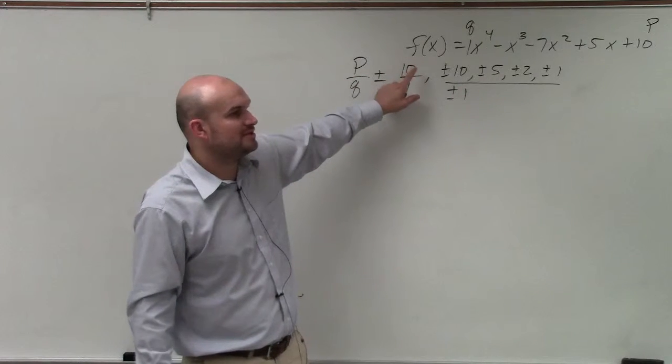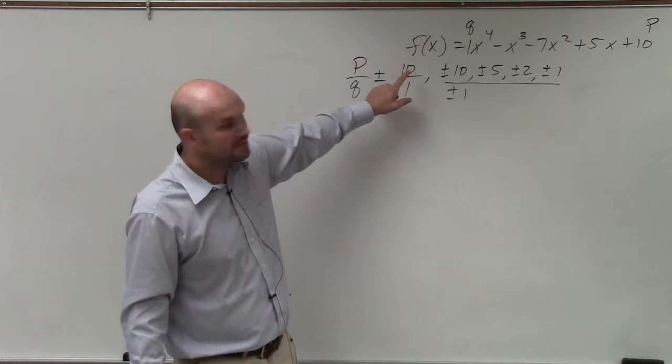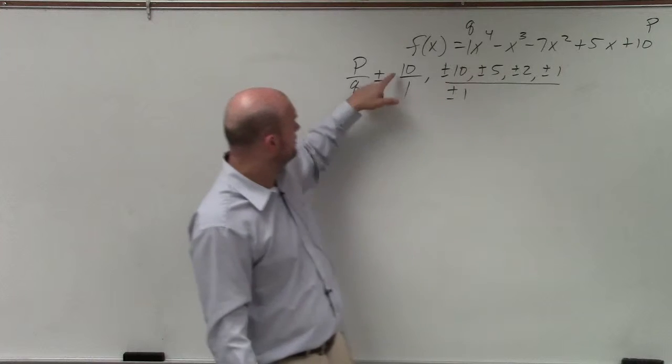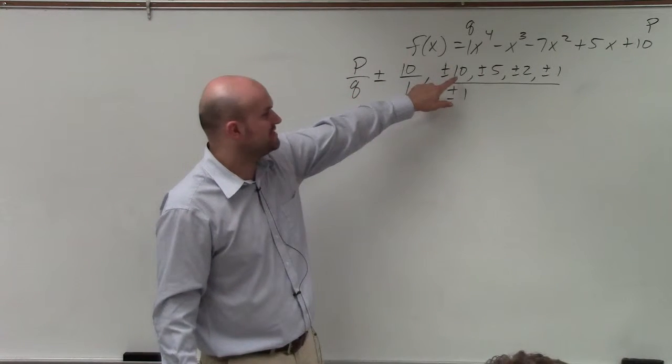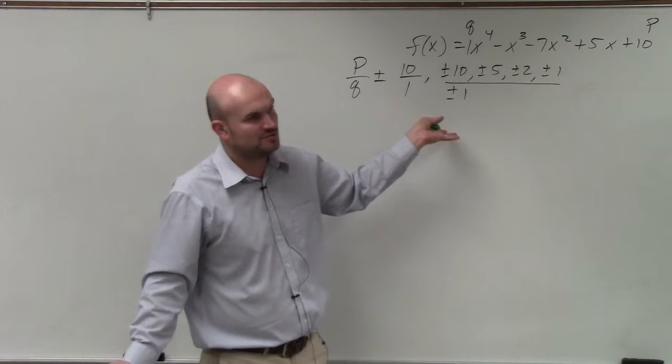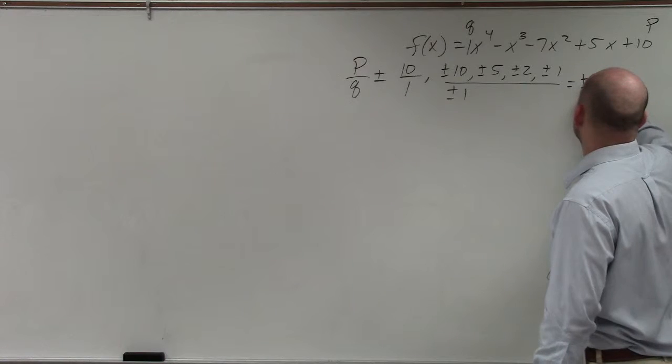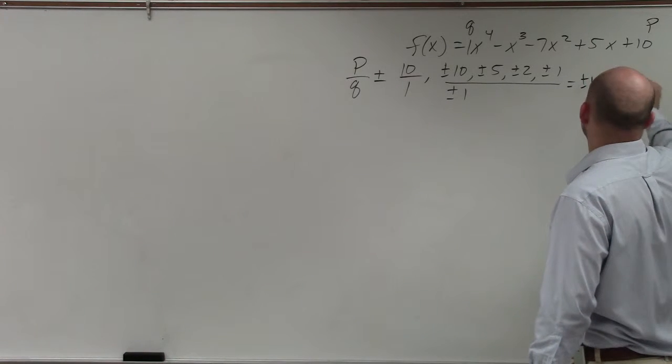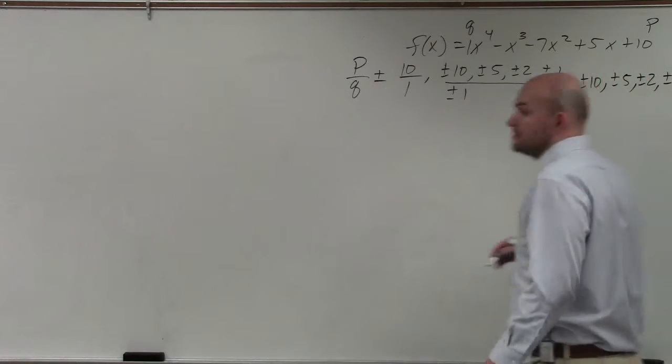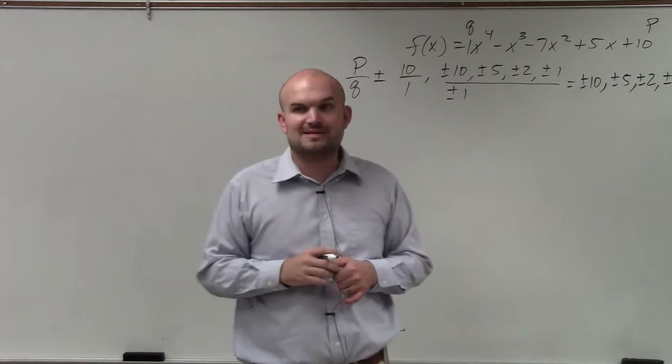You're just taking the factors of 10, which is your p, over the factors of 1. The factors of 10 are 10, 5, 2, and 1. The factors of 1 are obviously just 1. Now, it's nice when you have 1 as your q, because basically your rational zeros are, so therefore, your rational zeros are just going to be plus or minus 10, plus or minus 5, plus or minus 2, plus or minus 1.